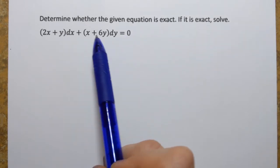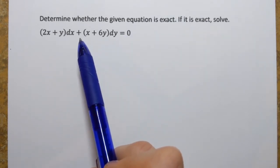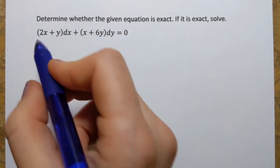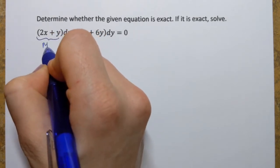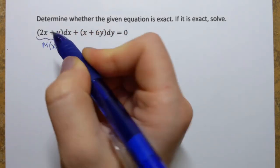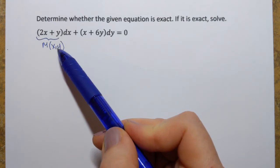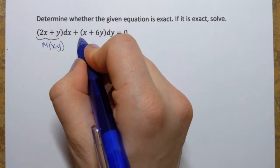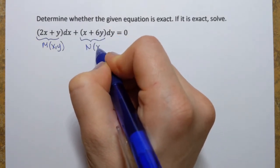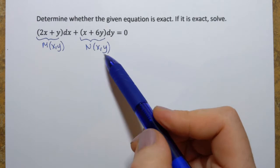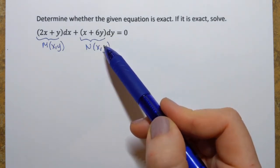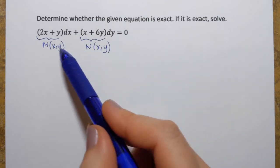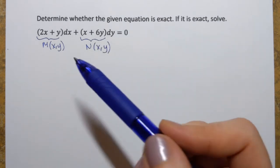But let's first check if they're indeed partial derivatives of some function f. For that, we have a theorem we're going to use, which says that if you take this function — we usually call it M of x, y — and differentiate it with respect to y, the opposite variable, and then take this function — we usually call it N of x, y — and differentiate it with respect to x, again the opposite variable, and if those results are equal, then that is an exact differential equation.